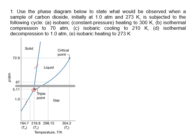Any point along a phase boundary can have two phases existing at the same time. At low temperature and high pressure, the solid phase is the most stable. At high temperature and low pressure, the gas phase is most stable, and in between it's the liquid phase.